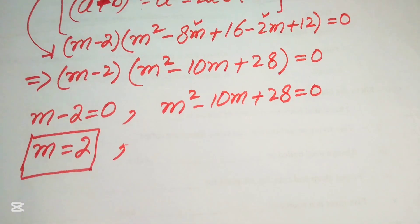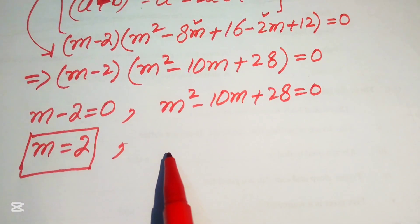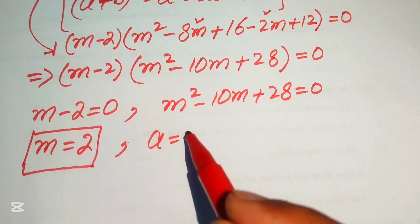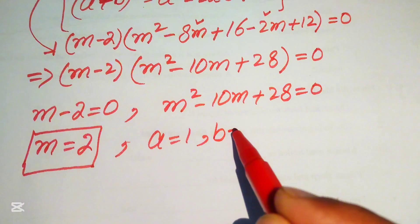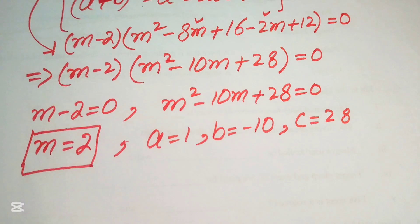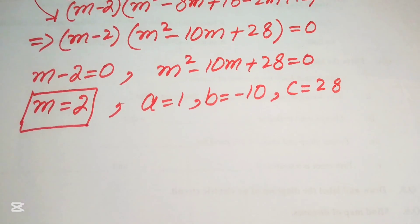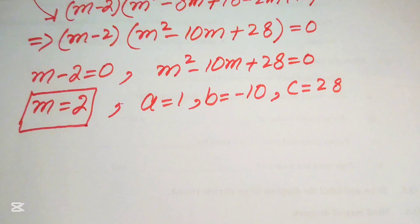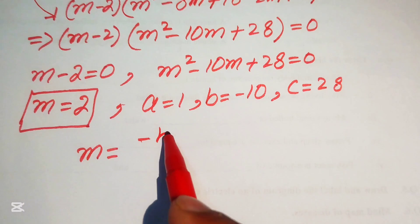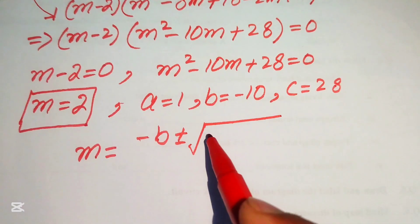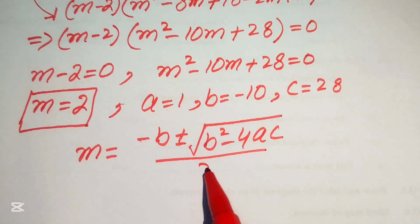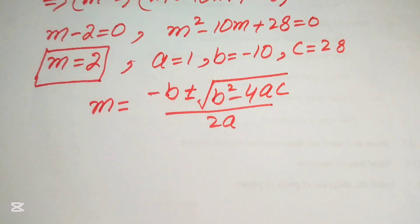To solve the quadratic equation M² - 10M + 28 = 0, we identify its coefficients: a = 1, b = -10, and c = 28. We then apply the quadratic formula: M = (-b ± √(b² - 4ac)) / (2a).